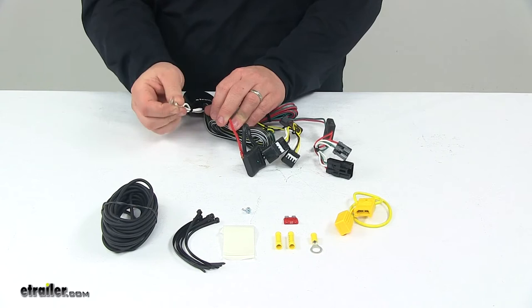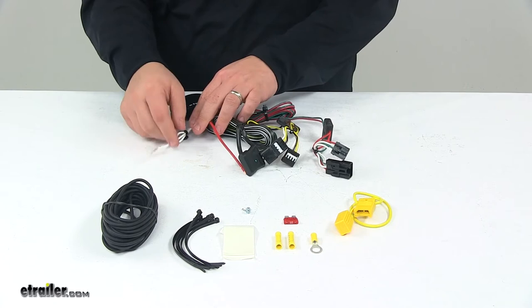Once you have those plugged in, you'll need to make a good ground connection. That's your white wire with a ring terminal attached to it. You want to get that grounded to a suitable grounding location, and you can use the included screw to accomplish that.